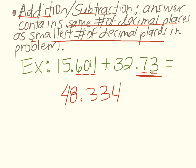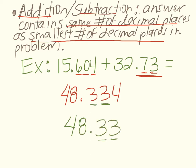Looking back down at our answer, we should only have two decimal places, but right now we have three, so that means you have to round. Recall: when the number behind the digit you're rounding is five or greater, you round up; if it's four or lower, you keep it the same. In this situation, the answer is just going to remain 48.33, because you only needed two decimal places.